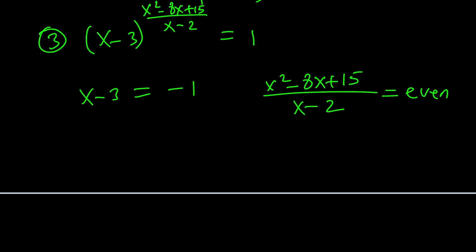If x-3 is equal to negative 1, add 3 to both sides, you get x equals 2. Uh-oh, Houston, we have a problem. What is that problem? The problem is that makes the denominator 0. Therefore, this expression becomes undefined.